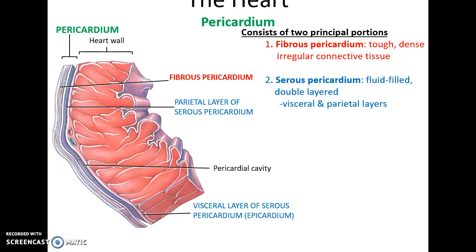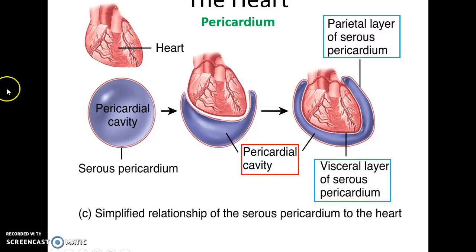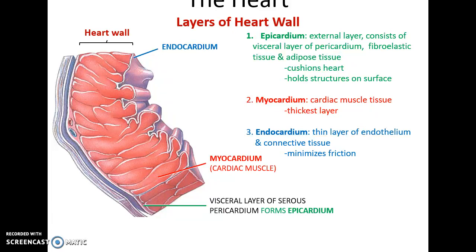Serous membranes are sort of like fluid-filled water bags. If you push the organ in, you end up with two layers: the visceral layer against the organ, and the parietal layer against the thing surrounding the organ. The wall of the heart is made up of three main regions. The superficial region is the epicardium, which is made up of the visceral layer of the pericardium as well as any fibroelastic tissue and adipose tissue on the surface of the heart. The adipose tissue helps to cushion the heart and hold structures on its surface.